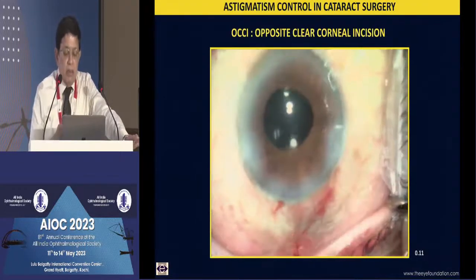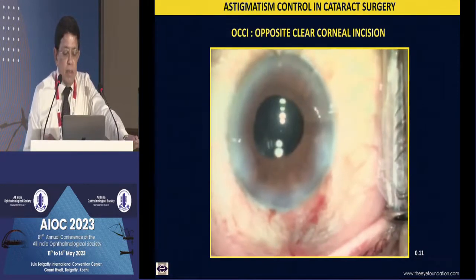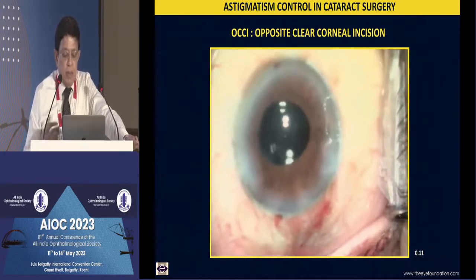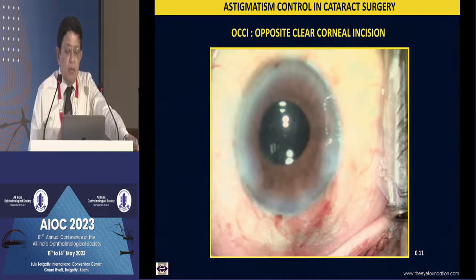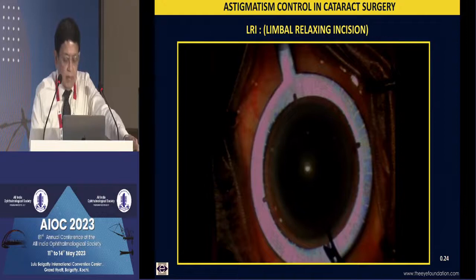The opposite clear corneal incision: at the end of surgery you pass a 2.4 millimeter diamond knife nasally. There are papers showing it neutralizes up to about 0.2–0.3 diopters. Since no instrument passes through this incision there is no distortion, and this wound almost completely heals up. I believe it is more for the surgeon's comfort level than any true impact on serious astigmatism, so this is something I hardly practice.